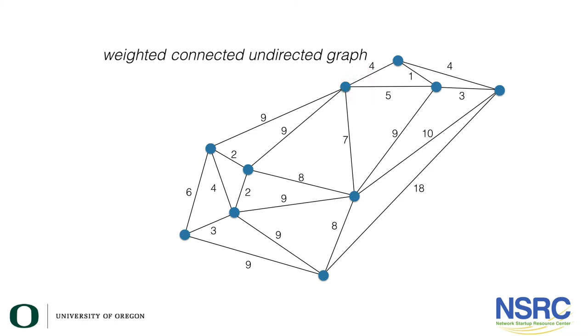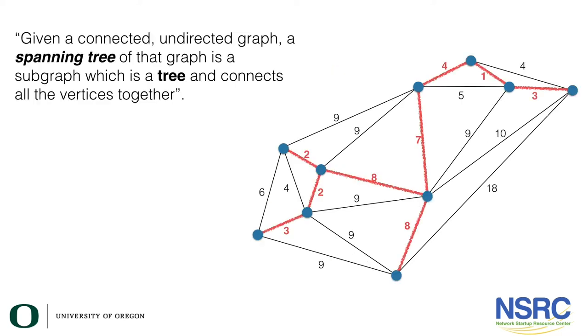Let us return to the definition of spanning tree. Given a connected undirected graph, a spanning tree of that graph is a subgraph, which means a subset of the graph, which is a tree. Now we haven't talked about a tree.